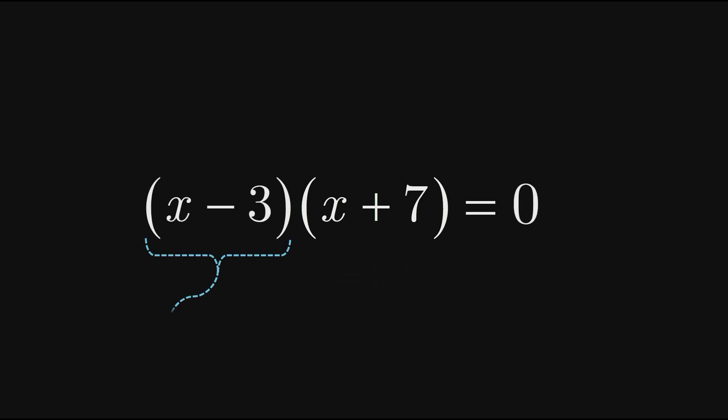Having x minus 3 equal to zero would imply that the value of x is 3, since 3 minus 3 is zero. Similarly, for x plus 7 to work out to zero, x would have to be negative 7, since negative 7 plus 7 is zero.